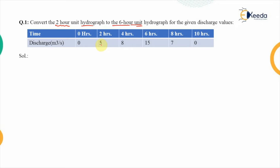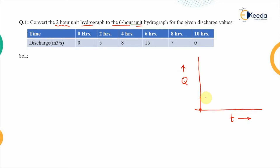Initially, if we plot the curve, the y-axis shows discharge and the x-axis shows duration. At zero time there was zero discharge; at 2 hours the discharge value was 5; at 4 hours this value raised up to 8; and at 6 hours duration that value is 15.